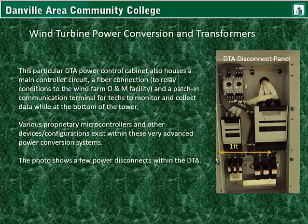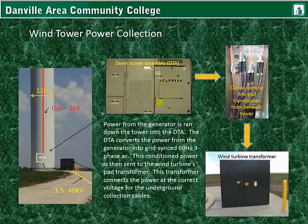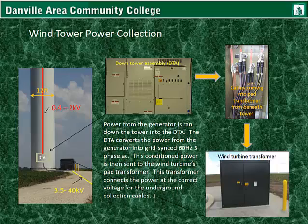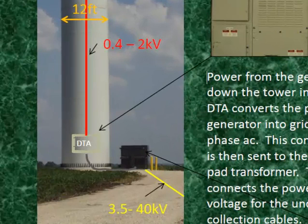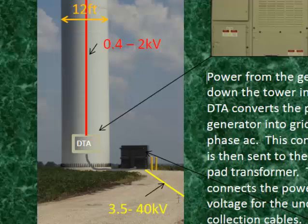This photo shows a few power disconnects within the down tower assembly. Power from the generator is run down the tower into the DTA. The DTA converts the power from the generator into grid-synced 60 Hz three-phase AC. This conditioned power is then sent to the wind turbine's pad transformer. This transformer connects the power at the correct voltage for the underground collection cables, where it is stepped up.